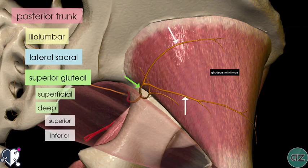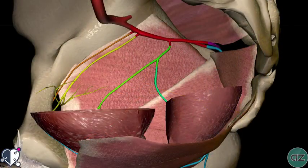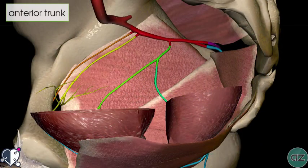That's the posterior trunk of the internal iliac artery. Next, we'll take a look at the anterior trunk. The anterior trunk has several branches — up to eight branches may be present. There is a lot of anatomical variation in the branches of the anterior trunk of the internal iliac artery.